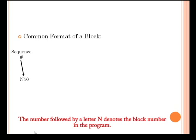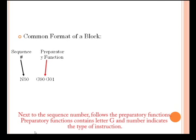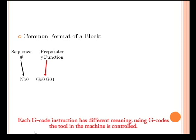The common format of a block starts with a sequence number, indicated by letter N. The number followed by N denotes the block number in the program. Next follows the preparatory functions, which contain letter G and a number indicating the type of instruction. Each G-code instruction has different meaning.